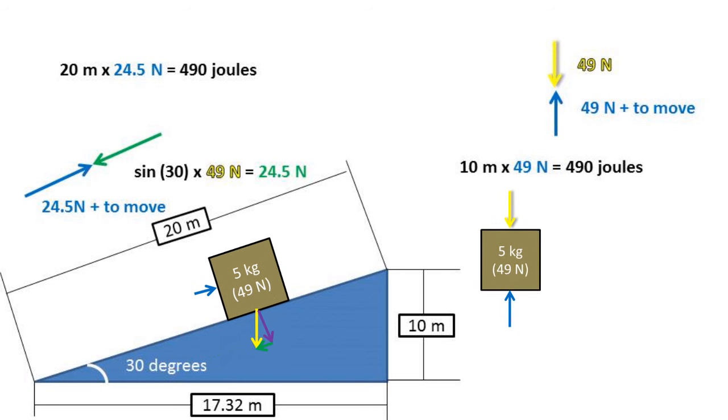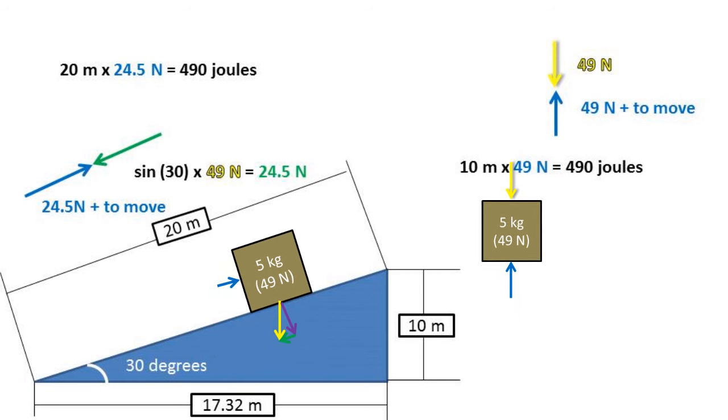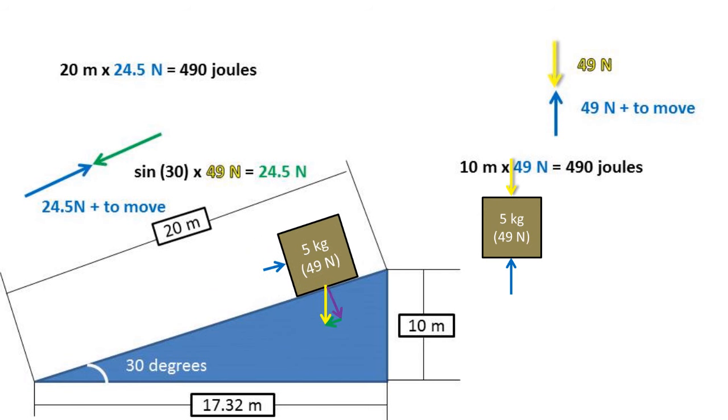In the incline plane example, we have to push the box 20 meters to gain the same height of 10 meters. When pushing the box up the incline, we have traded off reducing the force by half at the cost of increasing the distance by 2.